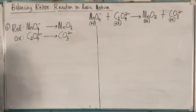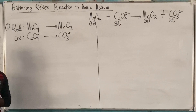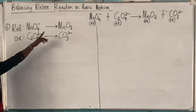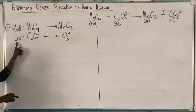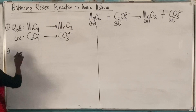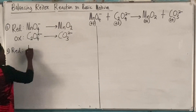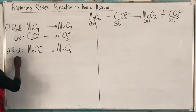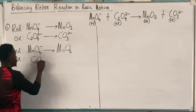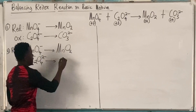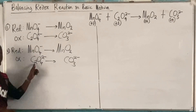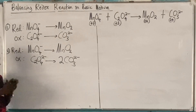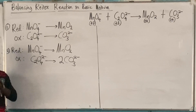Rule number two says balance atoms other than oxygen and hydrogen. In the reduction half cell, the only non-oxygen/hydrogen atom is manganese, which is already balanced — one on each side. In the oxidation half cell, carbon is not balanced: C₂O₄²⁻ has two carbons, CO₃²⁻ has one, so we place a coefficient of 2 in front of CO₃²⁻. Atoms are now balanced.